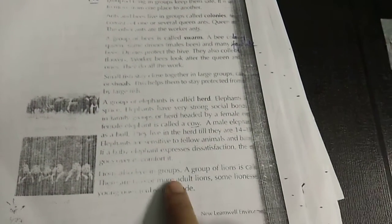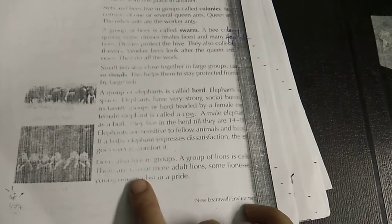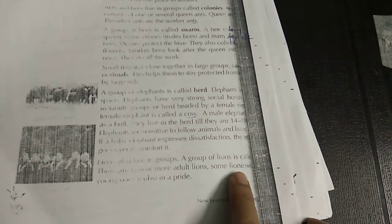Lion also live in group. A group of lion is called pride. They also have two or more adult lions. Some lioness is also there. And young ones, that is, cub. They are babies in a pride. They live in a pride. So, group of lion is known as pride.